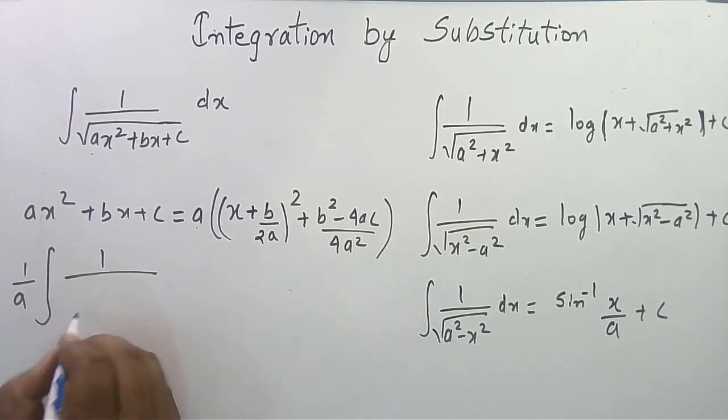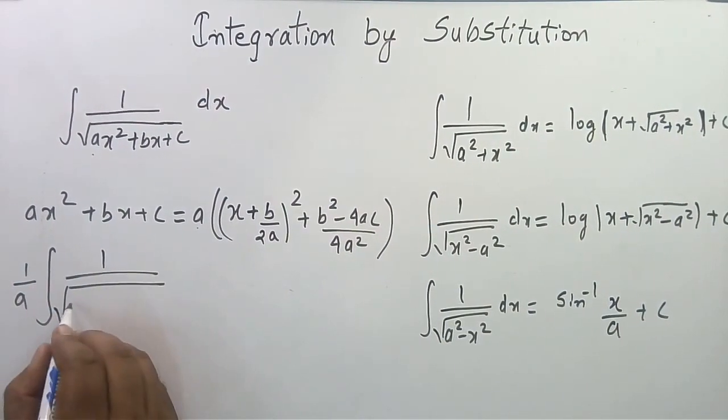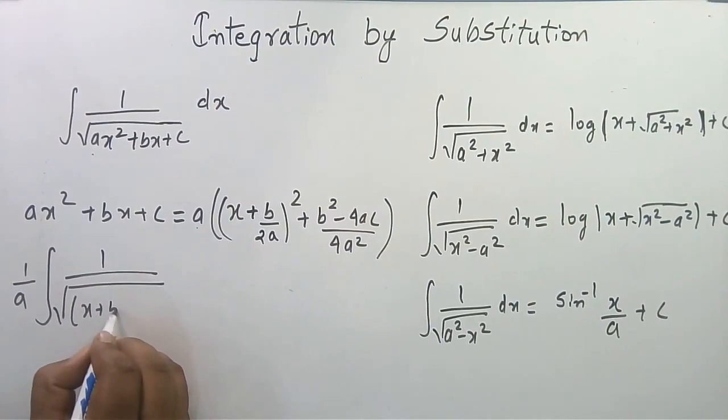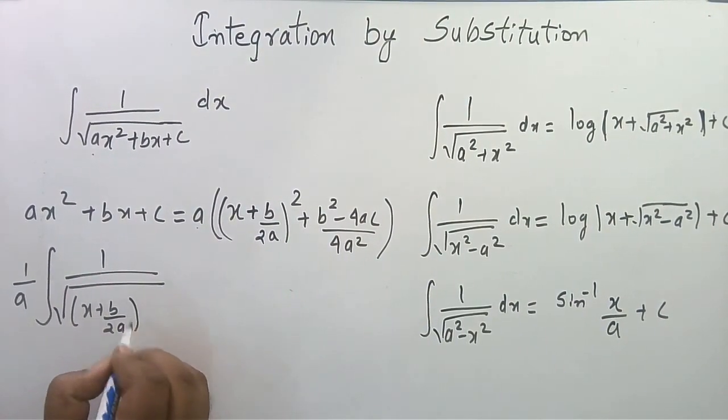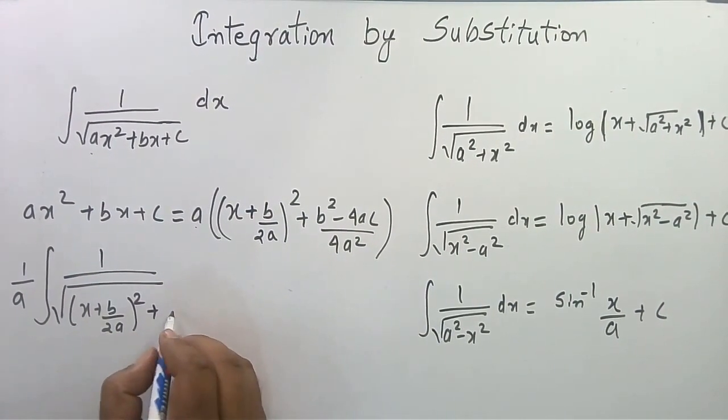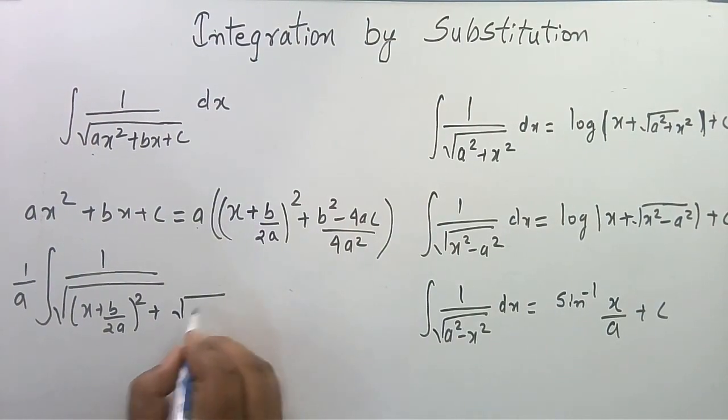In this case we are taking 1/a outside. This will become (x + b/2a)² plus the remaining terms.